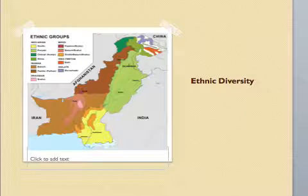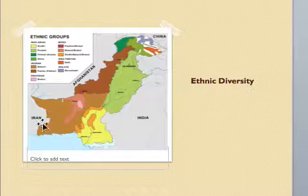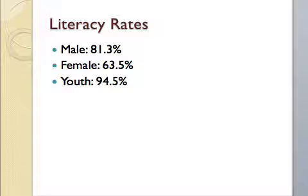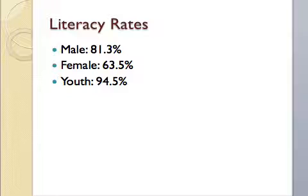Here's a map of the ethnic diversity. As you can see, there are a lot of different ethnic groups just in Pakistan alone. The literacy rates for males are 81.3%, for females 63.5%, and for youth 94.5%. I believe the reason the female literacy rate is low has to do with religion as well as the country — women don't have as many rights as men, which is why the male population has a higher literacy rate.